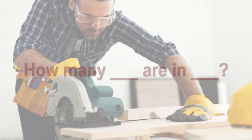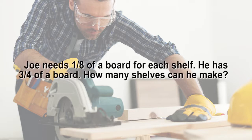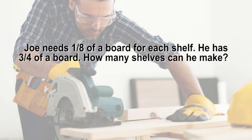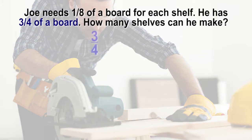Let's look at a problem. Joe needs 1/8 of a board for each shelf. He has 3/4 of a board. How many shelves can he make? Analyzing the problem, we see that the whole is 3/4 of a board, which is the dividend.